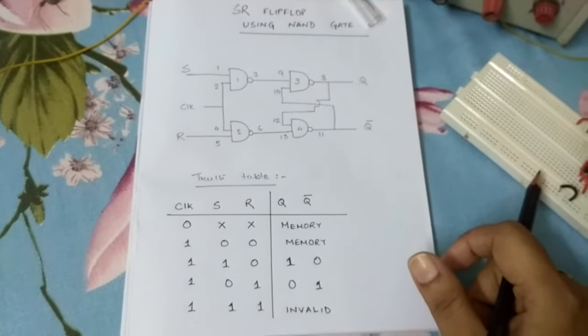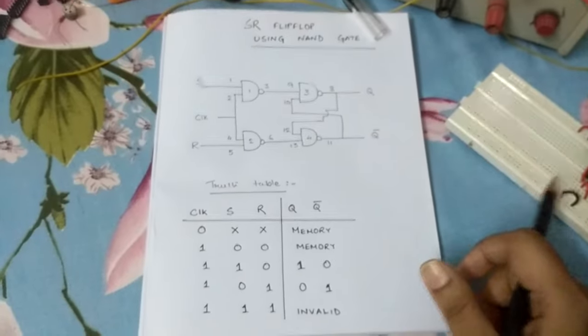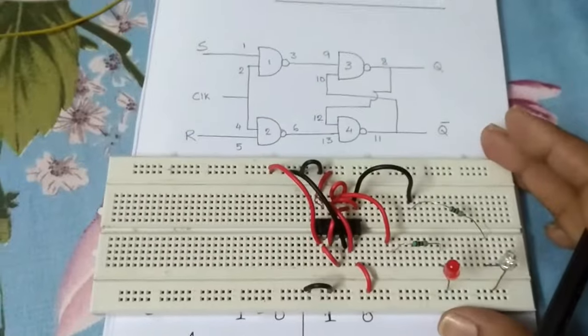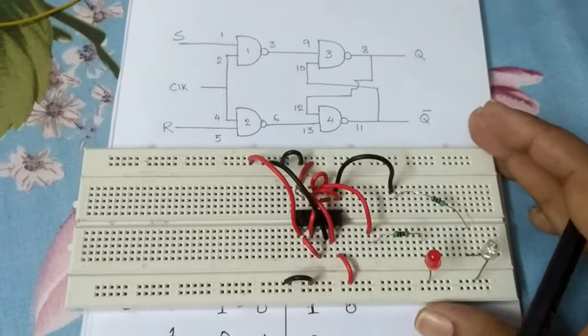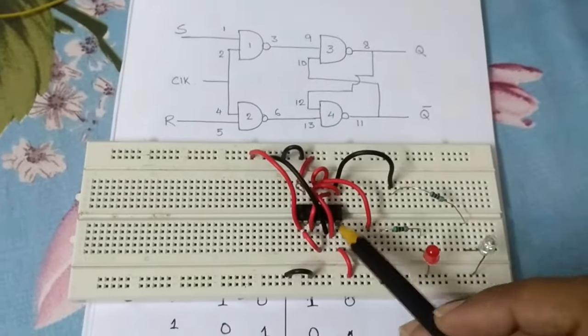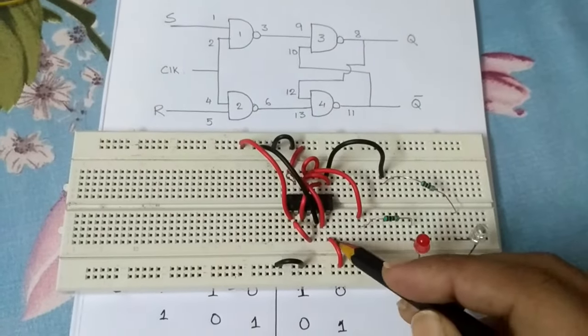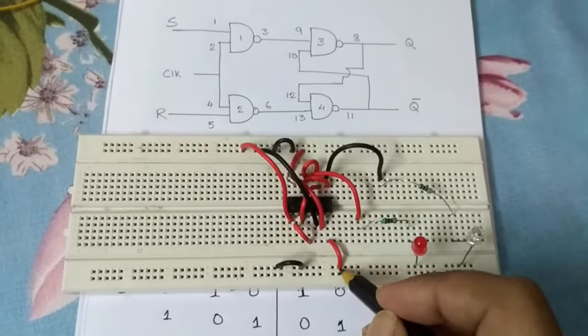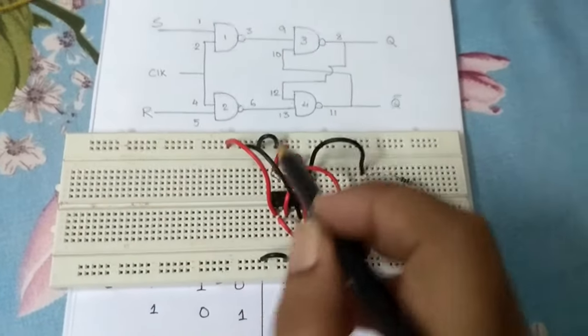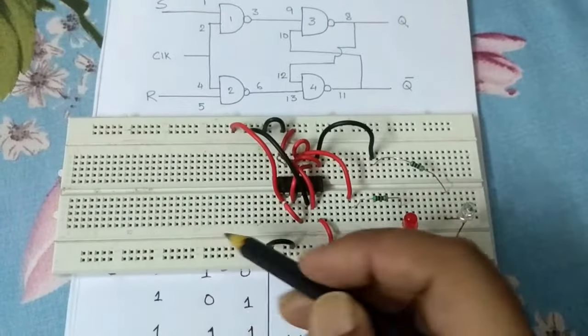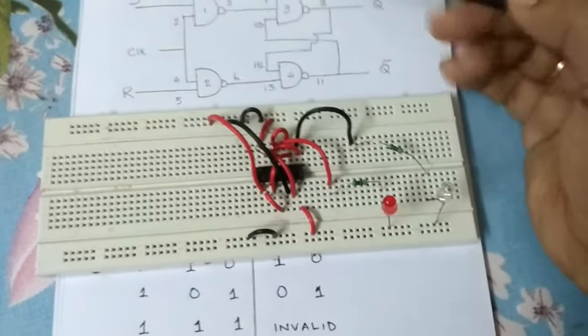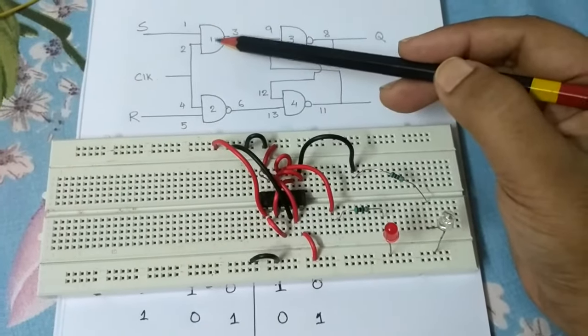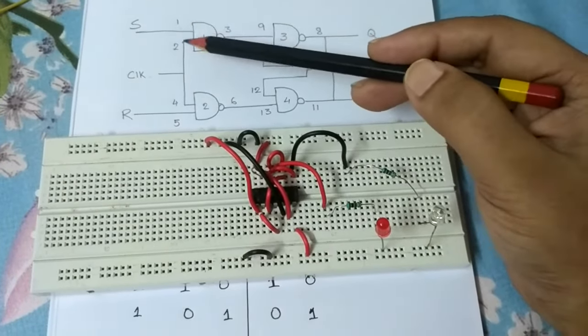Here comes the truth table that is to be followed while performing the experiment. Take a closer view of the circuit that I have just completed. I have taken a NAND IC and made the pin connections. Pin number 7 will be connected to ground, pin number 14 is connected to the power supply line.